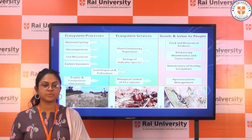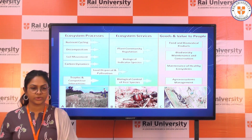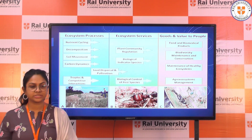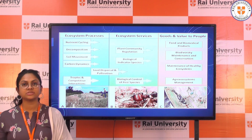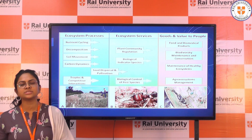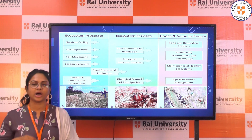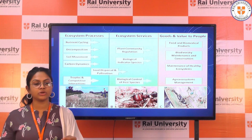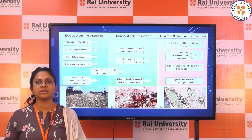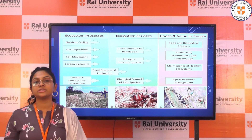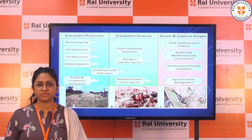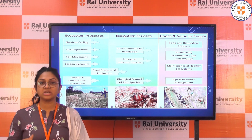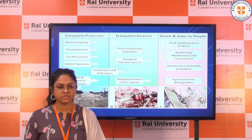In ecosystem services, there is plant community regulation, biological indicator species, and biological control of pest species. A practical example of ecosystem services is pest control — the destruction of harmful bacteria, viruses, or pesticides that are harmful to living beings and human beings.